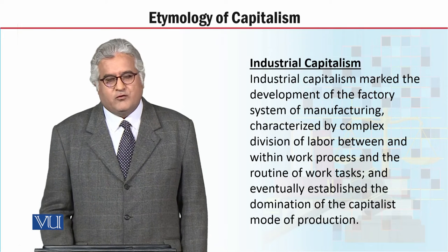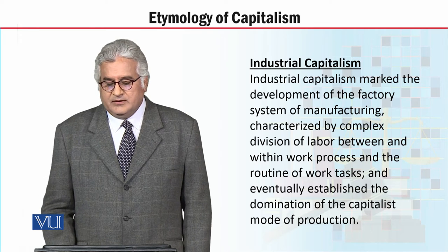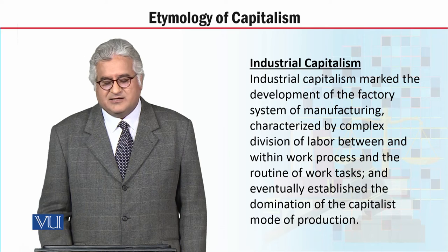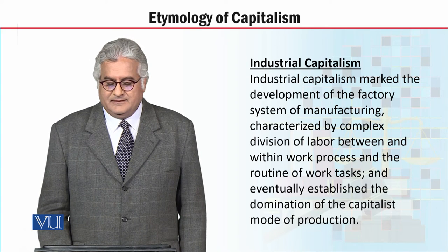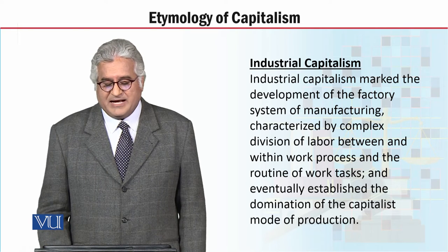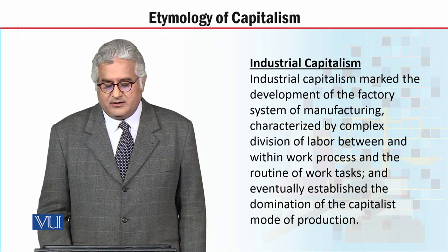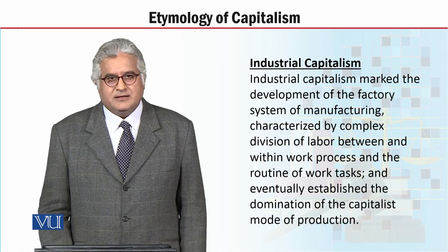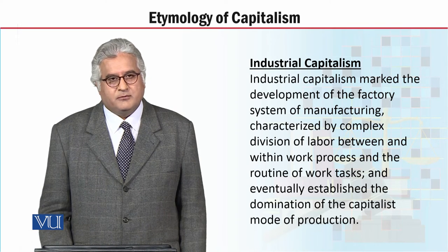Now let's move on to industrial capitalism. Industrial capitalism marked the development of the factory system of manufacturing, characterised by complex division of labour between and within work processes and the routinization of work tasks, and eventually established the domination of the capitalist mode of production.